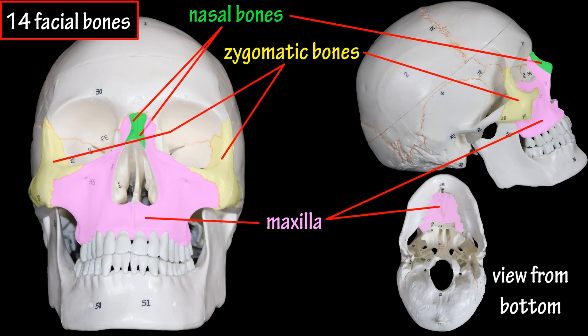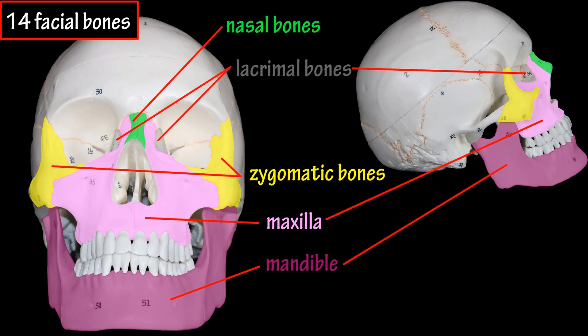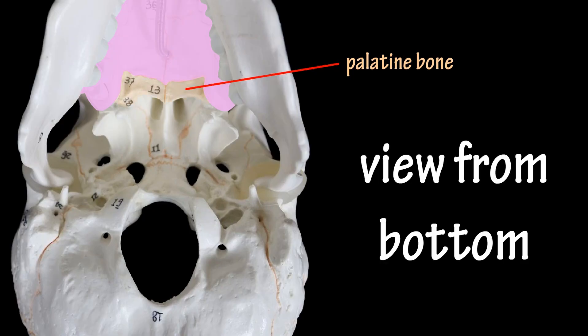Two zygomatic bones, or cheekbones, which also form the front outer portion of the eye sockets. The mandible, which is the lower jaw bone. Two lacrimal bones, located on the front inner portion of the eye orbits. Two palatine bones, located in the back of the upper jaw.